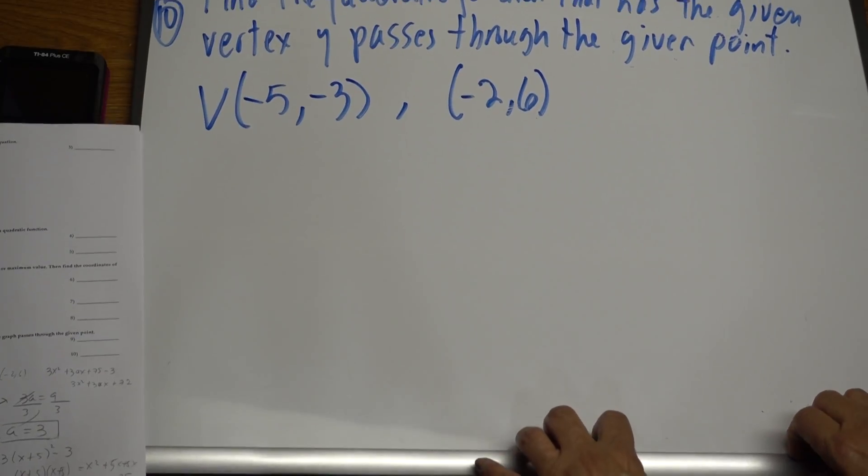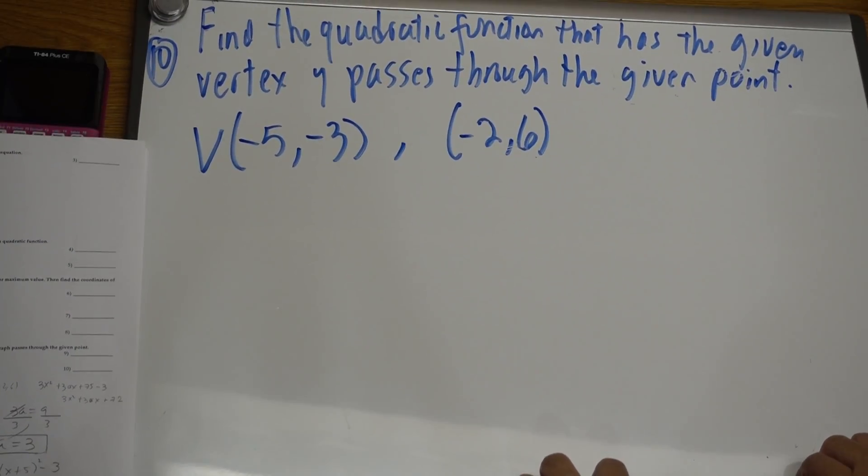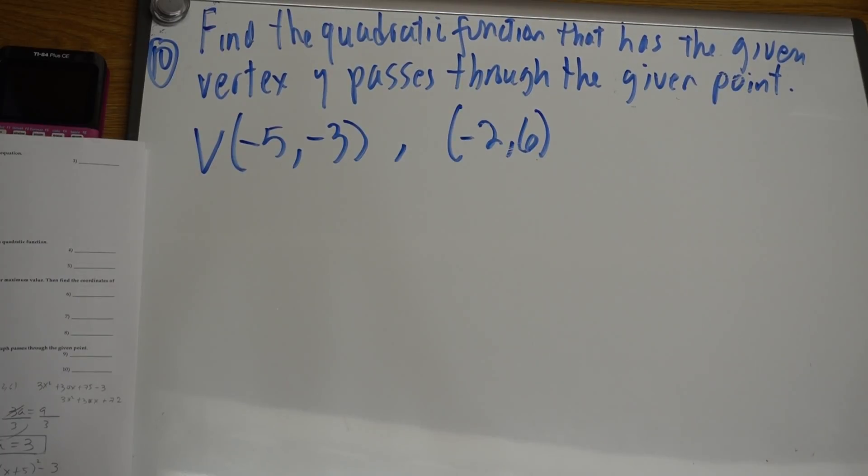This problem says find a quadratic function that has the given vertex and passes through the given point. The vertex is (-5, -3) and the given point is (-2, 6).